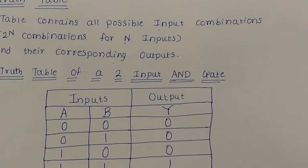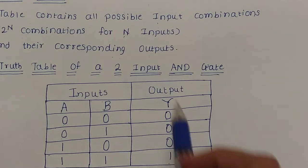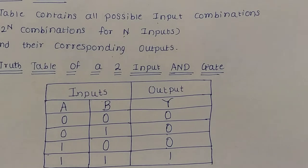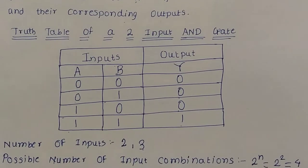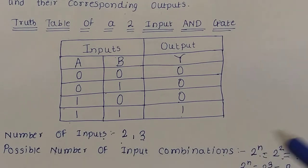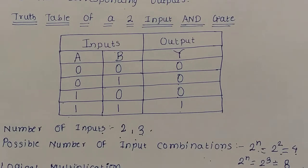Here we will see the truth table of the 2-input AND gate. For 2 inputs, 2 raised to 2 gives 4 input combinations. As we know: 0·0 = 0, 0·1 = 0, 1·0 = 0, and 1·1 = 1. So the AND gate output is 1 only when all inputs are 1. For different numbers of inputs: 2 inputs give 4 combinations, 3 inputs give 8 combinations (2³), and 4 inputs give 16 combinations (2⁴).